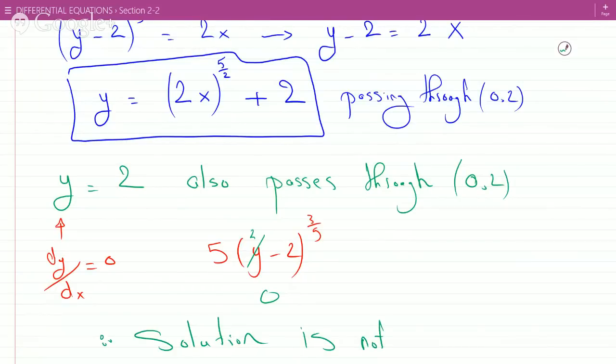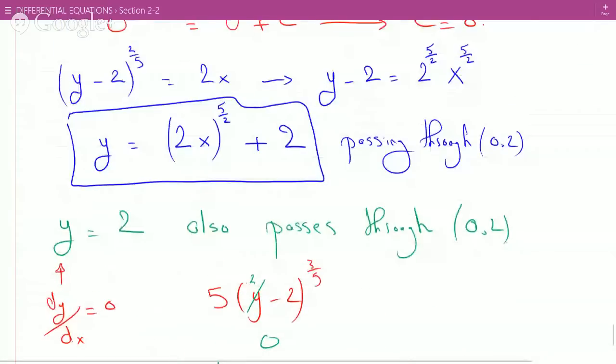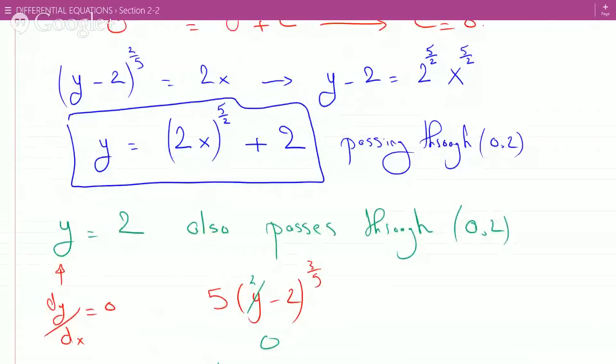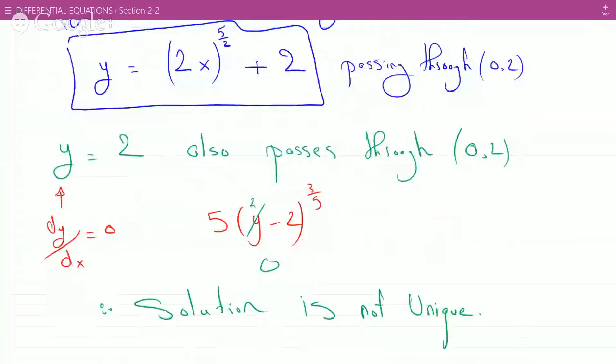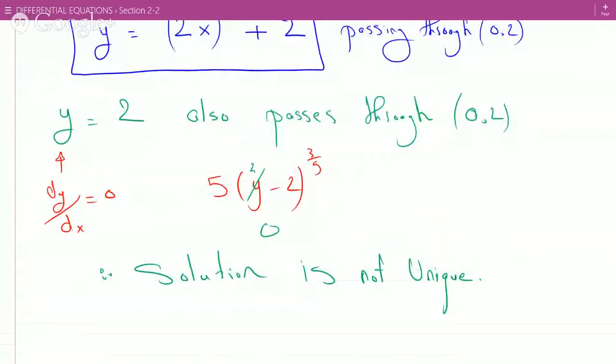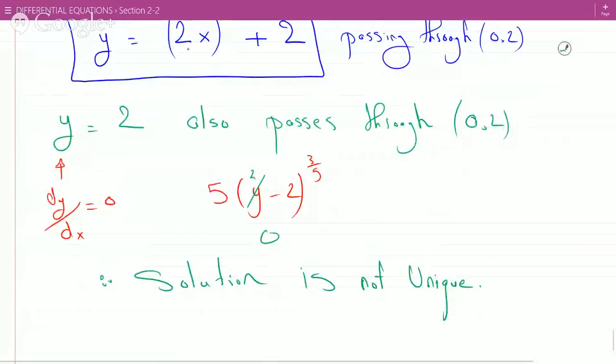Solution is not unique. That kind of summarizes what we were actually discussing earlier about the fact that you could find a solution that goes through (0,2), but since y equals 2 is also a solution that satisfies the initial value, then the solution is not unique.